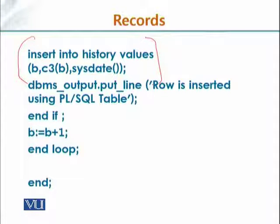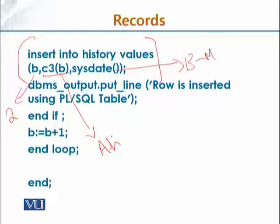Now look at this: insert into history. This table name is history values B which is going to be the index created. Where the index will be created for example 2, C3 of B let's suppose value is put, and sysdate which is let's suppose the date 13th May 2016 for example. So these 3 values can be inserted in the history table.